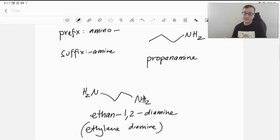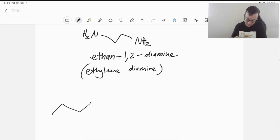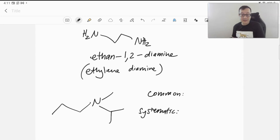If we have multiple things on our nitrogens, just like with naming amides, we will use the N as a locator number. So, for example, if we have something like this, we have two ways of naming it. We can do a common name, or we can do the systematic name.